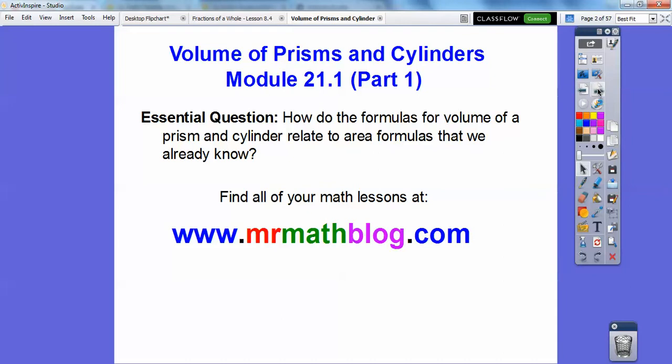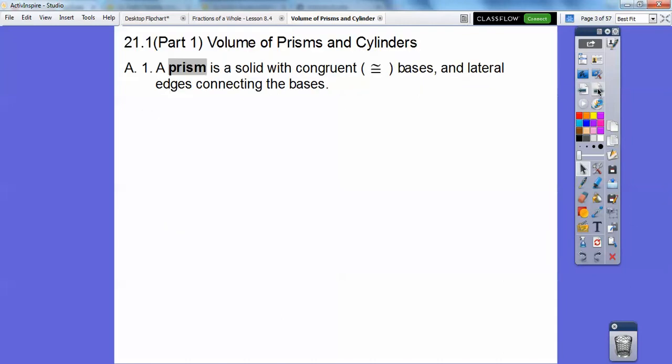So we did area prior to this lesson right here. Alright, so prisms. A prism is a solid that has congruent bases and lateral edges that connect the bases. And you're thinking, what does that mean?